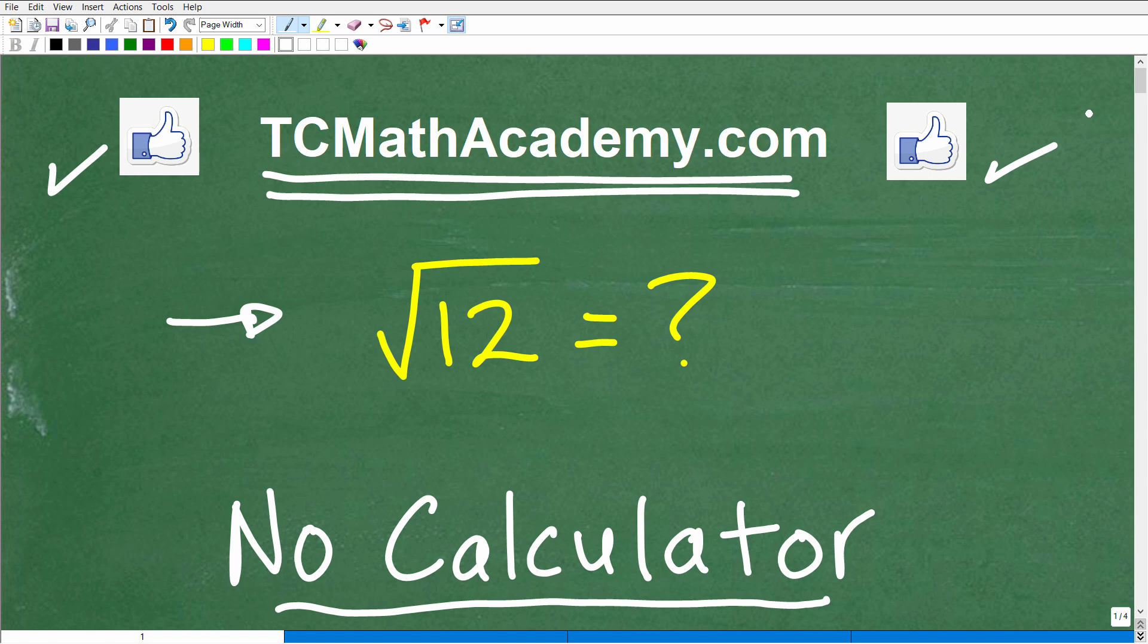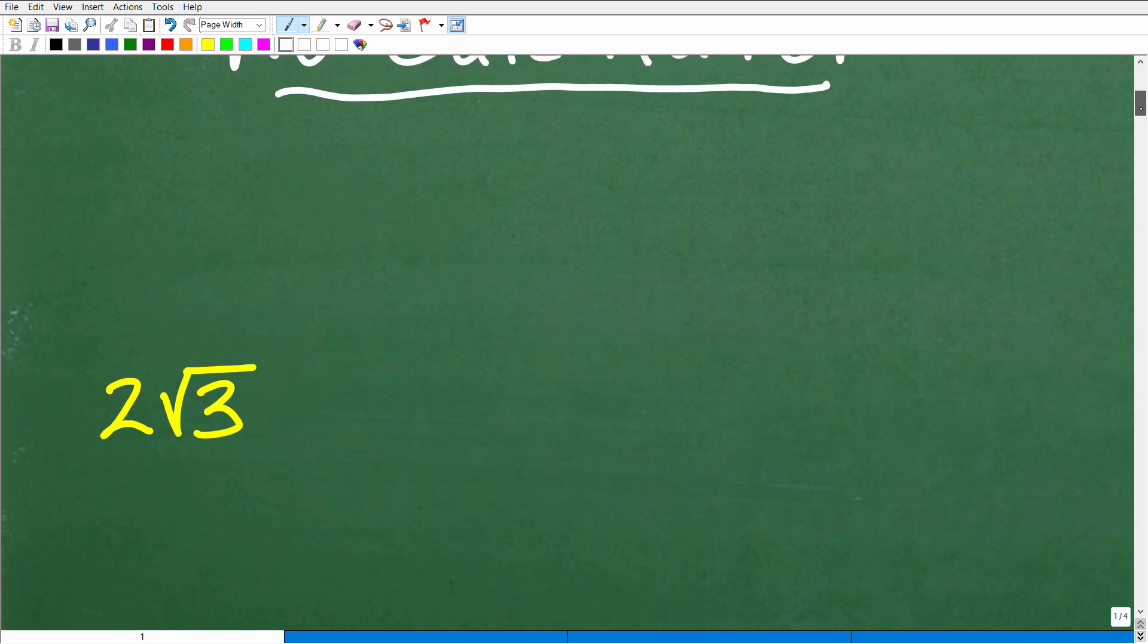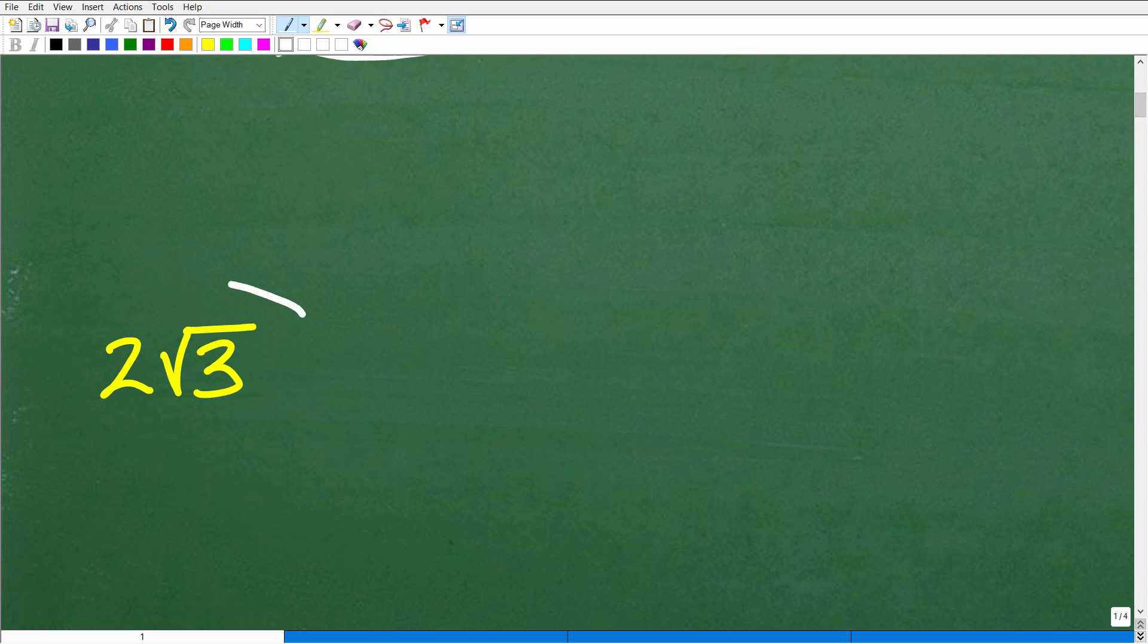Okay, so what is the square root of 12? What is a simpler way to write this? Well, the answer to this particular question is, let's go ahead and take a look at it right now, the square root of 12 is equal to 2 times the square root of 3. Okay, so this is the correct answer. Hopefully you got this right. But if you didn't get this right, you're going to see how easy it is to do this problem.